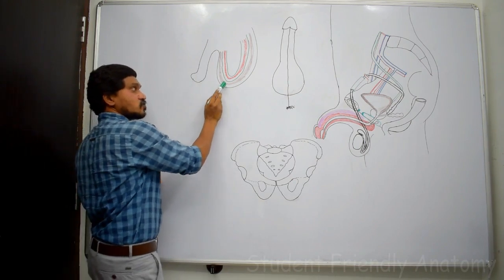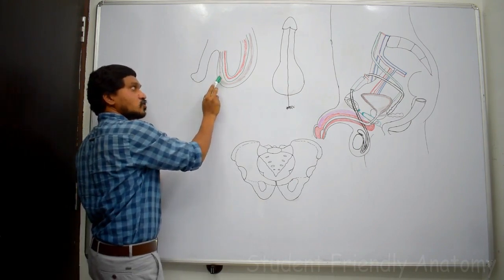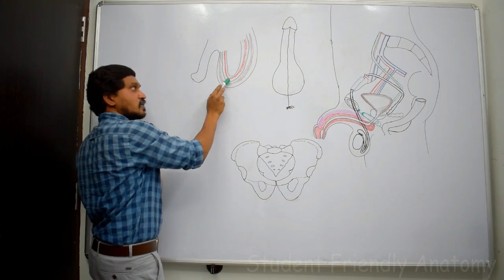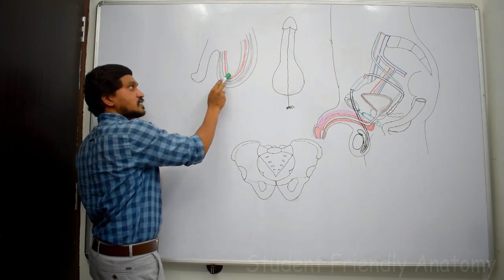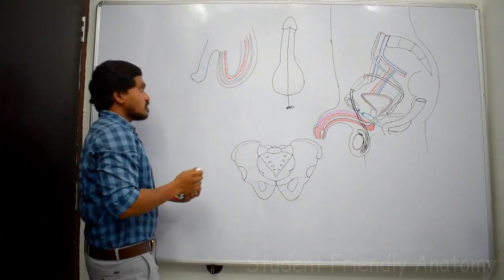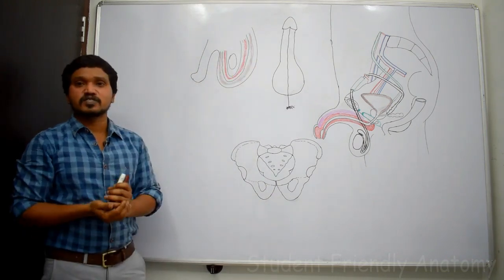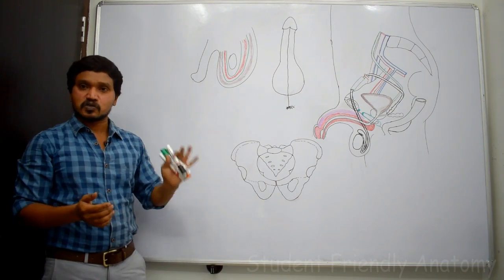To summarize the layers: skin, then superficial fascia modified as dartos muscle and Colles' fascia, then external spermatic fascia derived from the external oblique muscle, then cremasteric muscle and cremasteric fascia, then internal spermatic fascia. Within this sac you can find the testis.